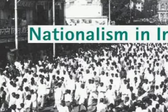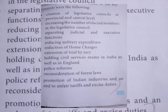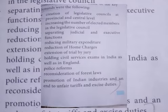The techniques included appeals, petitions, and delegations to Britain, all done within a constitutional framework. Some of the key demands were: creation of legislative councils at the provincial and central levels, increasing the number of elected members in the legislative council, and separating judicial and executive functions.